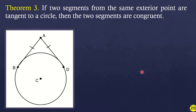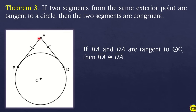Theorem 3: if two segments from the same exterior point are tangent to a circle, then the two segments are congruent. The exterior point is point A. In the illustration, if line segment BA and DA are tangent to circle C, then BA is congruent to DA.